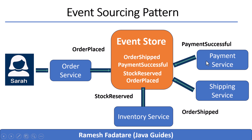So to wrap up: event sourcing is a powerful pattern that works beautifully with microservices. Instead of saving state, each service saves events like 'order placed,' 'payment successful,' and 'order shipped.' These events are stored, shared, and used to build views, recover from failure, and track what really happened. In our e-commerce example, we followed Sarah's order through the order, inventory, payment, and shipping services, and saw how events made the whole process traceable and resilient. If this helped clarify event sourcing in a real system, give the video a like and subscribe for more real-world backend content.